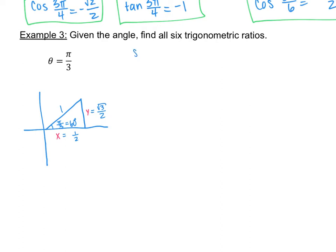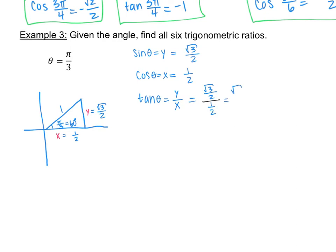So sine of pi over 3 is the y value: square root of 3 over 2. Cosine of pi over 3 is the x value: 1 half. Tangent is y over x — square root of 3 over 2 divided by 1 half. Keep the top, flip the denominator; the 2s cancel, leaving square root of 3 over 1, which is just square root of 3.